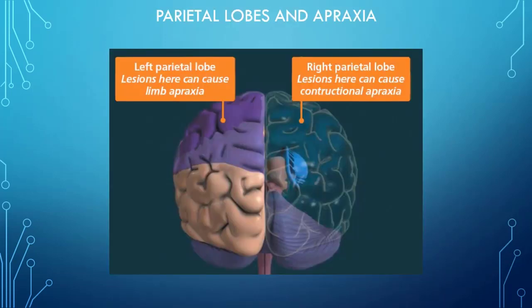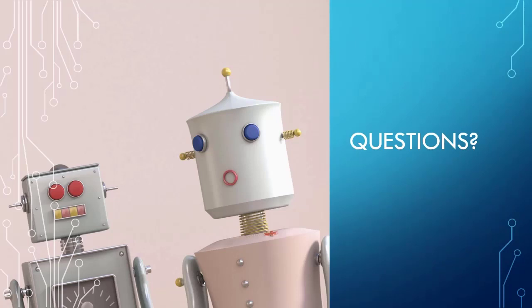Constructional apraxia involves trouble with geometrical constructions and relationships, and comes from damage to the right parietal lobe. This is a similar but different apraxia where somebody has an inability to draw specific pictures and diagrams because they're unable to convert spatial information into a motor plan. These are oversimplifications, but they're examples of how the parietal lobe — where polysensory information comes together — translates information about what movement we were told to perform, or information from a sensory system like a picture, into a specific motor plan within the motor system.